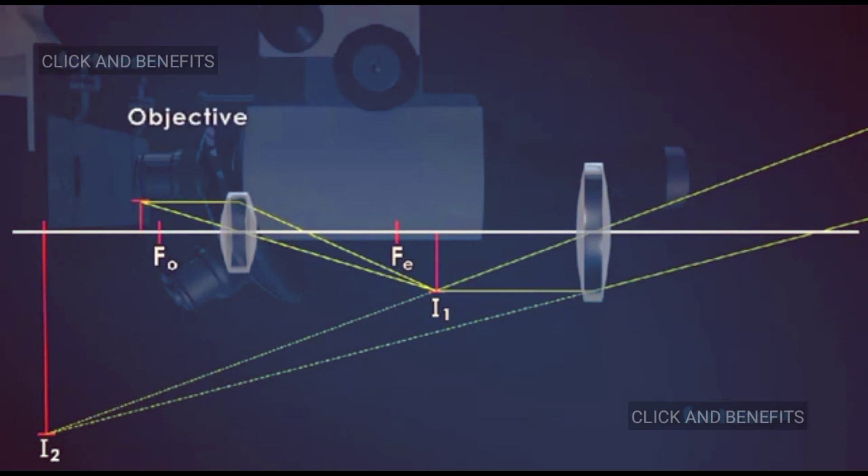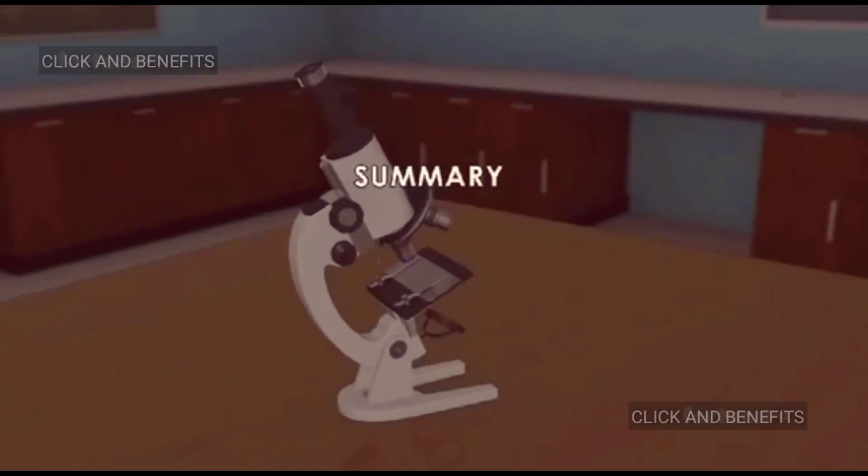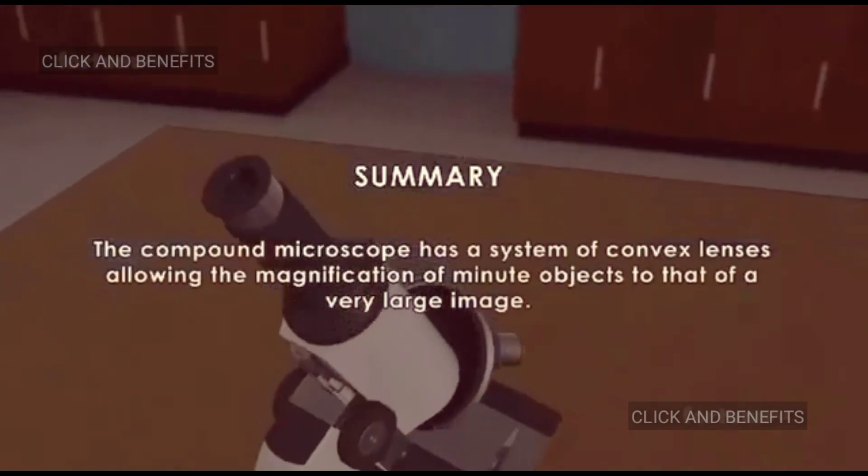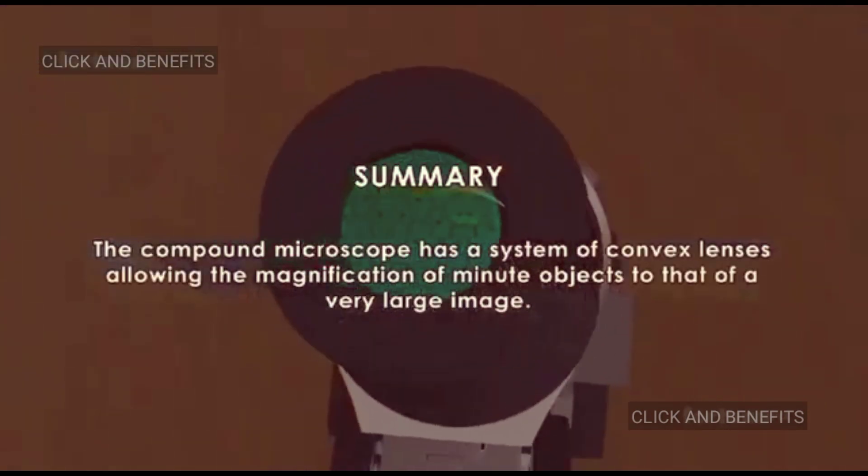For example, if the objective has a magnification of 40x and that of the eyepiece is 10x, then the magnifying power of the microscope is 400x.